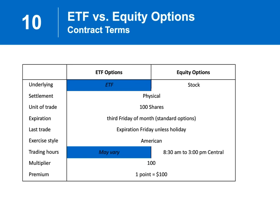ETF versus equity options — what are the differences? The underlying with the ETF option is the ETF; with an equity option, it's stock. You do get physical settlement of that underlying. Each option corresponds to 100 shares. Expiration is the same: third Friday of the month for standard options. The exercise style for ETF options is American style, which means they can be exercised or assigned at any time up to expiration. Trading hours may vary a little bit on the ETF option. Equity options trade from 8:30 to 3:00 p.m. central. The multiplier is 100, and option premiums must be multiplied by 100 as well.